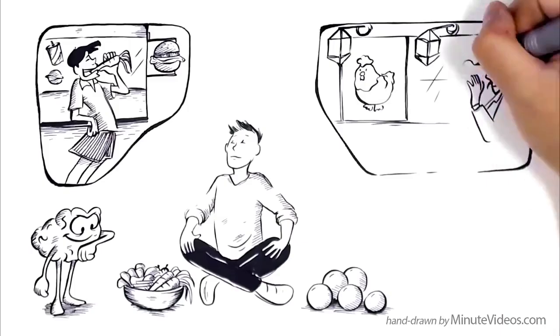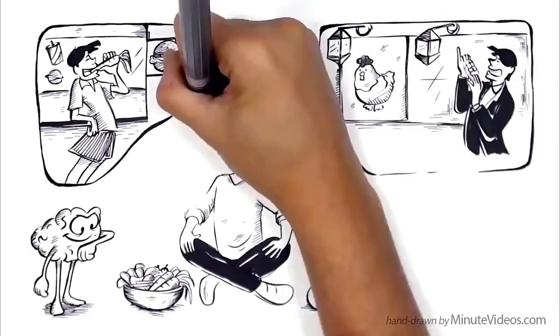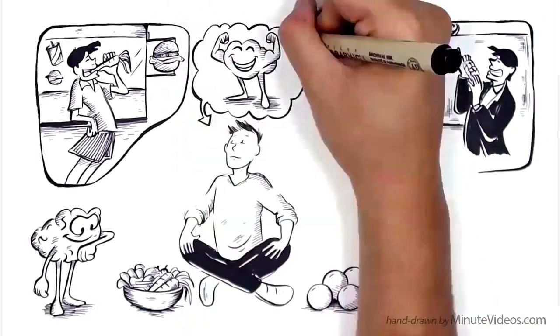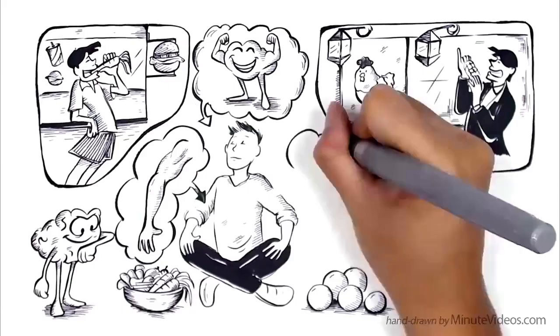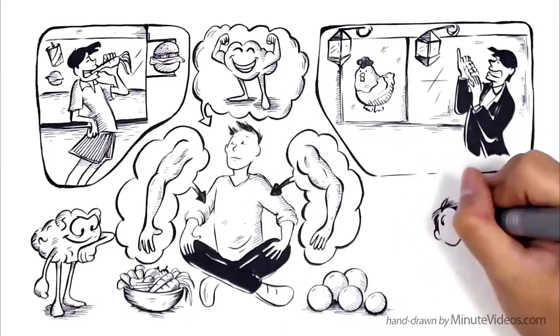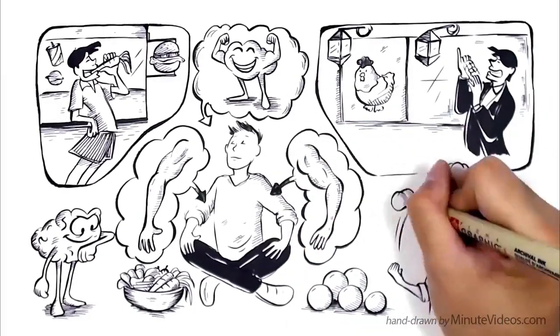you might soon realize that you can also skip chicken during the week. And when that happens, you learn that you can grow willpower like any other muscle in your body. Then anything is possible, even to become a vegetarian.